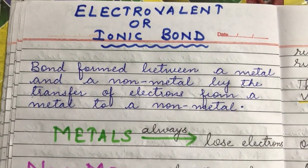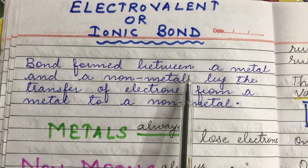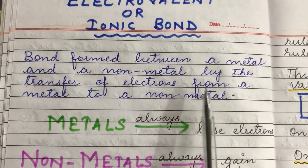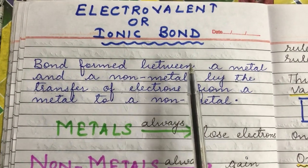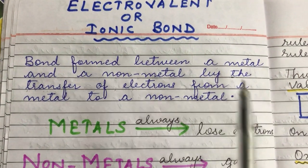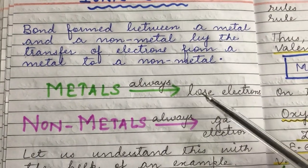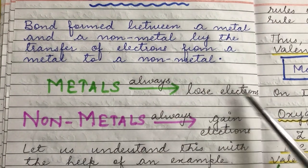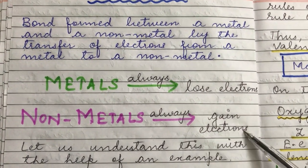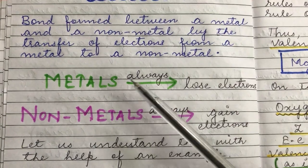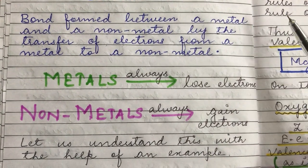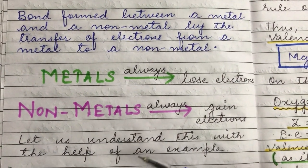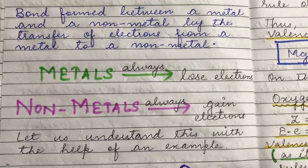What is an electrovalent or ionic bond? The bond formed between a metal and a non-metal by the transfer of electrons from a metal to a non-metal is called an electrovalent or ionic bond. Metals always lose electrons and non-metals always gain electrons. That means metals can only give electrons but never take them, and non-metals always gain electrons and can never lose them.